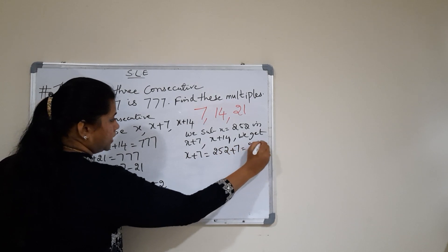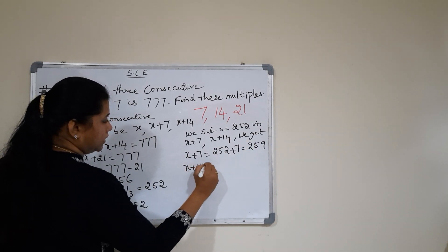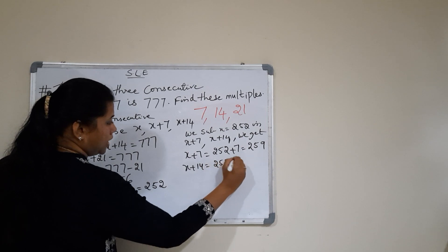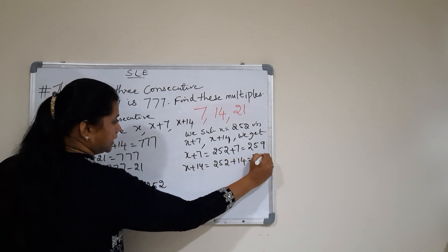x plus 14 is equal to 252 plus 14. That is 266.